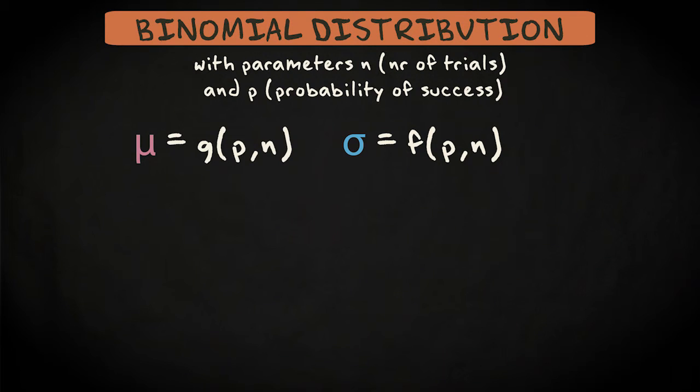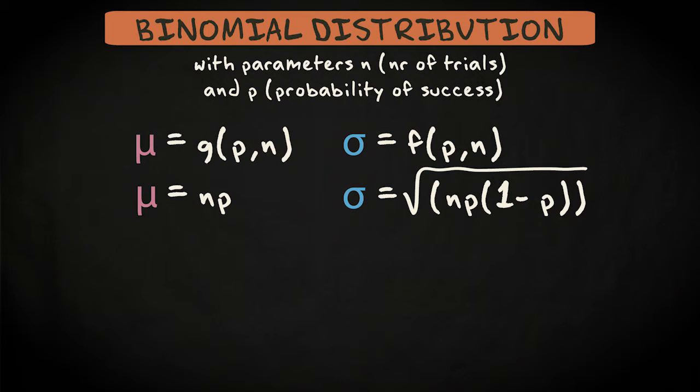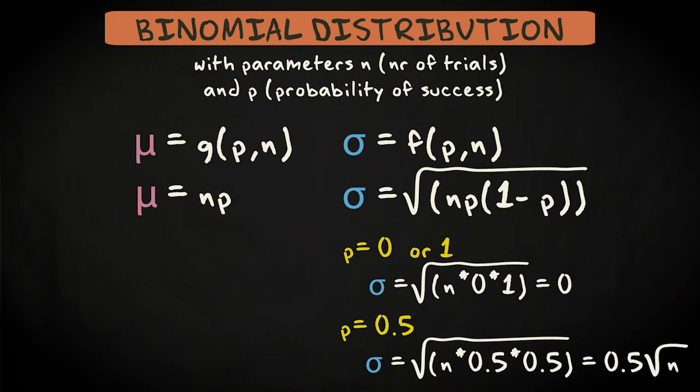The mean of a binomial distribution is equal to n times p, and its standard deviation is equal to the square root of n times p times 1 minus p. For p is 0 or 1, the standard deviation is 0. And for p is a half, it reaches a maximum of 0.5 times the square root of n.